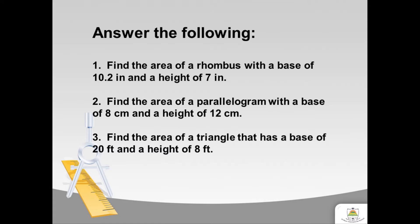In question number one, find the area of a rhombus with a base of 10.2 inches and a height of 7 inches. To find the area of a rhombus, we have to multiply the base and the height. The base is 10.2 and the height is 7 inches. After multiplying the two, you will get 71.4 square inches. Then you are correct.